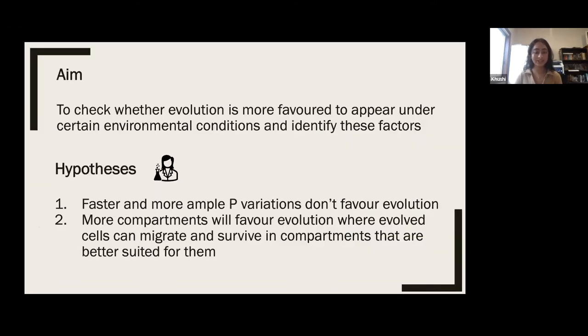Our aim is to check whether evolution is more favored to appear under certain environmental conditions and identify these factors. Now that we have our aim, we may establish our two hypotheses. One, faster and more ample P variations don't favor evolution, and two, more compartments will favor evolution where evolved cells can migrate and survive in compartments that are better suited for them.